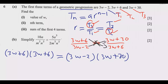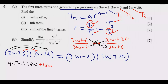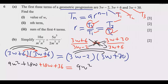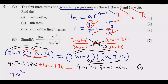Expanding the left side: (3w + 6)(3w + 6) gives 9w² + 18w + 18w + 36. Expanding the right side: (3w − 2)(3w + 30) gives 9w² + 90w − 6w − 60. Now we collect like terms from both sides.